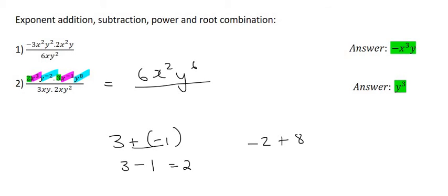Now we look at the bottom where we can see a three times by a two. Those are just normal numbers, not exponents, and so we just multiply them. Then we've got x over here and x over here. Remember each of those x's have an exponent of one and so one plus one is two. And then we've got y to the power of one here and y to the power of two over there. So that's going to be one plus two which is three.